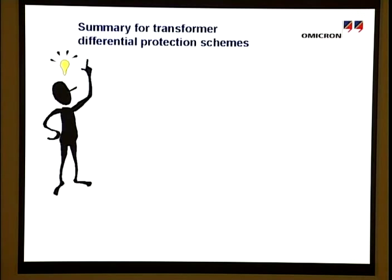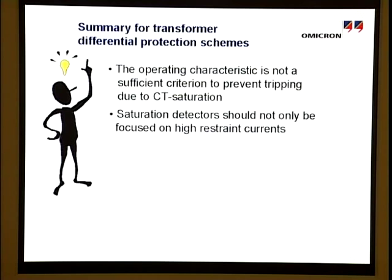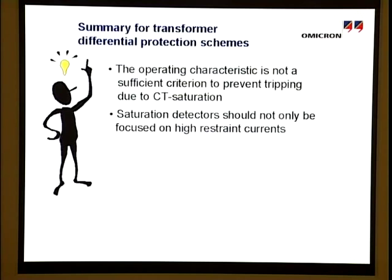As a conclusion, the following essential findings can be highlighted: The operating characteristic is not sufficient on its own to prevent tripping due to CT saturation. Saturation detectors should not only be focused on high-restraint currents. If the relay algorithm is based on the fundamental frequency of the differential current, applying TPX and TPZ cores at both ends does not create any difficulties and allows sensitive setting. Omicron provides solutions for analyzing and testing such complex situations.